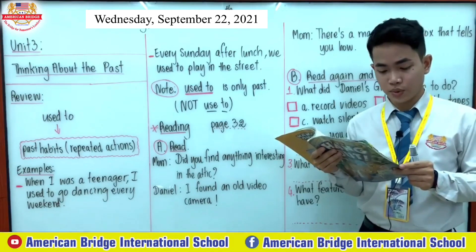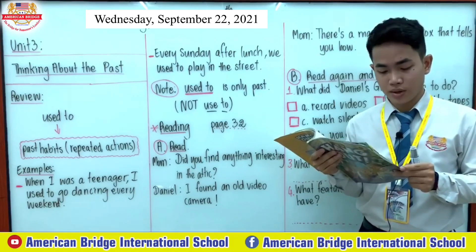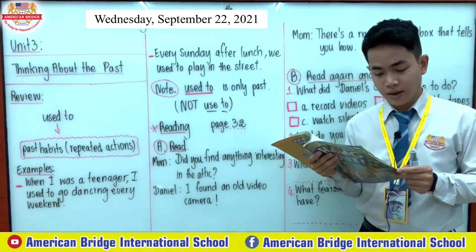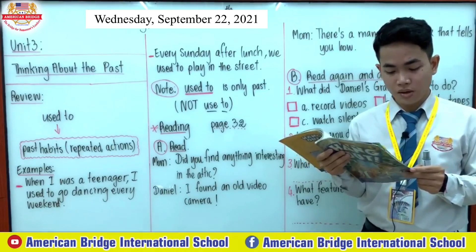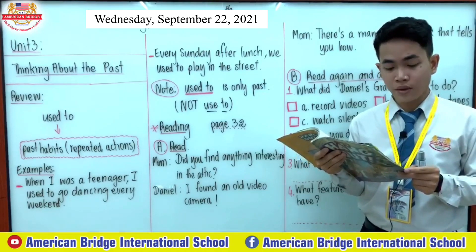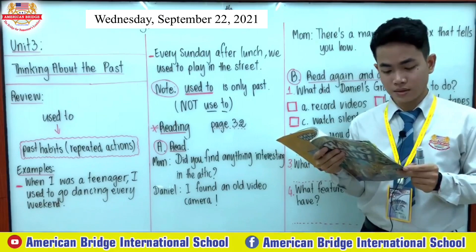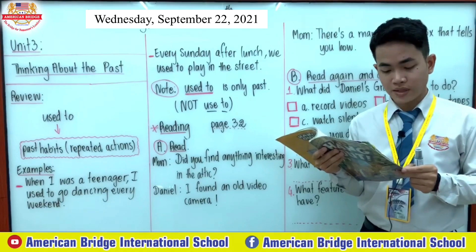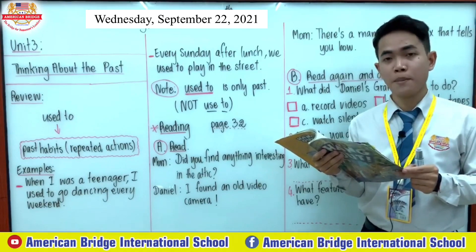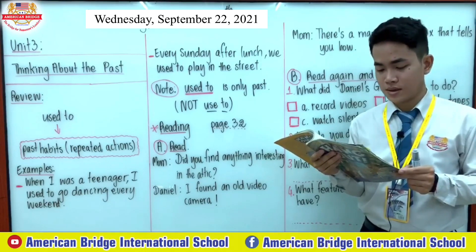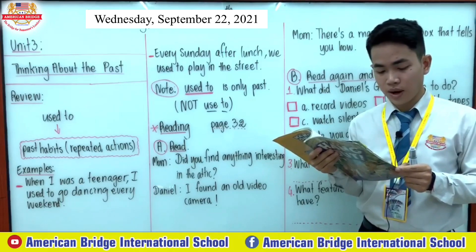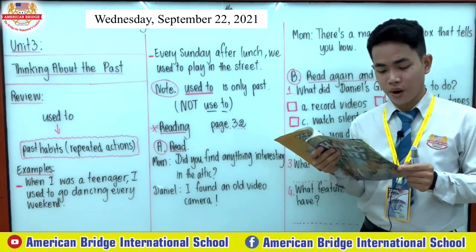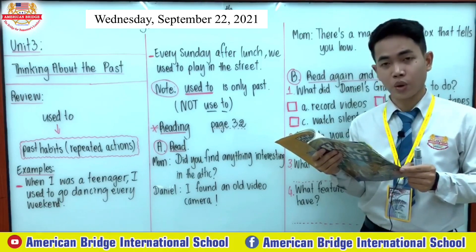Step two: Record. A — Remove the lens cover. B — Press the on button. C — Press the record button. Note: A red light appears when the video camera is in record mode.